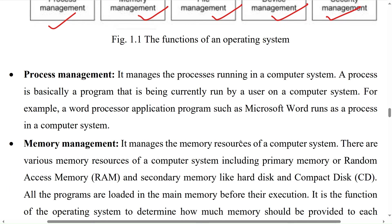The following are the important functions of the operating system: process management, memory management, file management, device management, and security management. Process management: a process is basically a program that is currently being run by a user on a computer system. For example, a word processing application such as Microsoft Word runs as a process in a computer system.